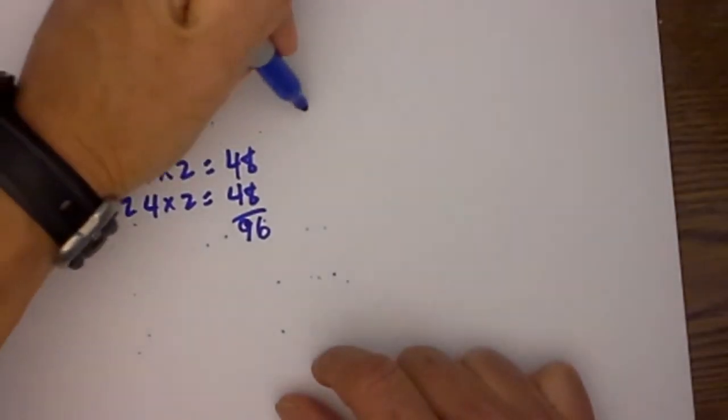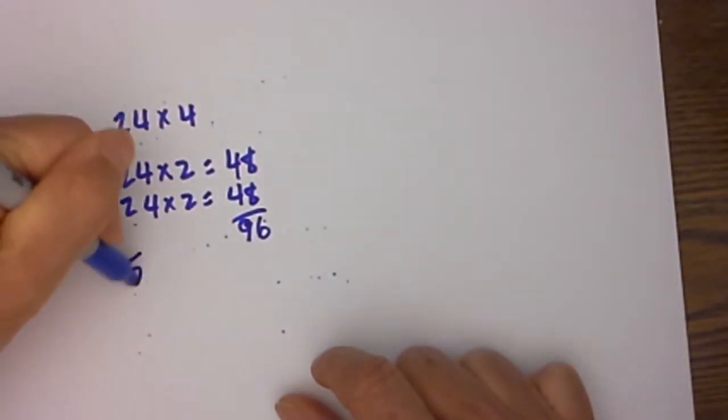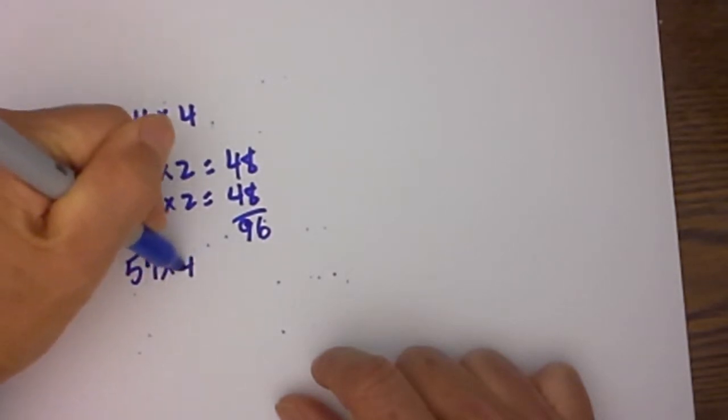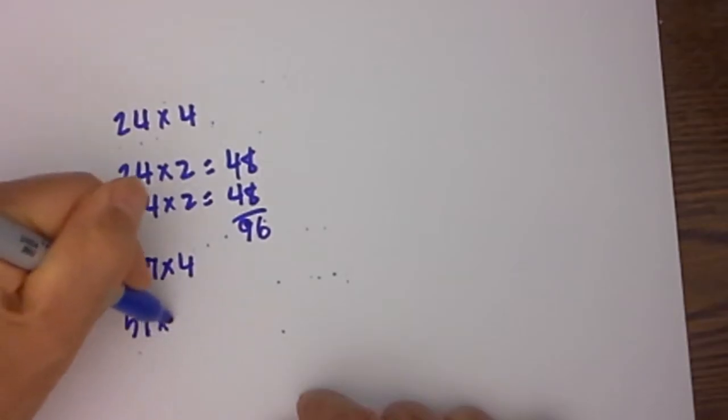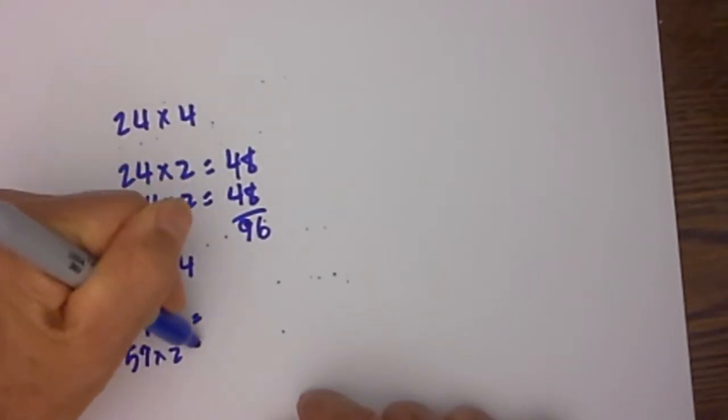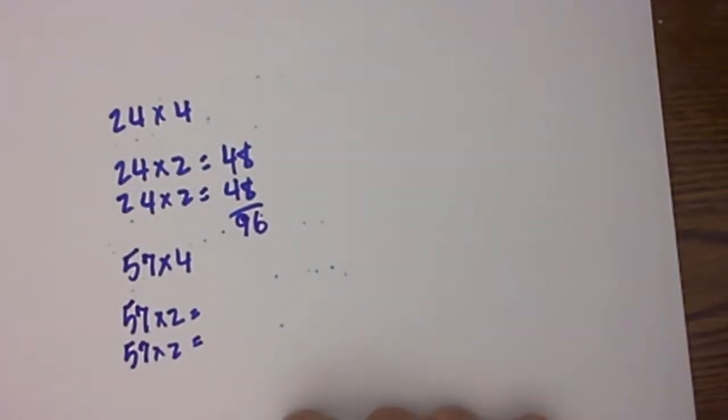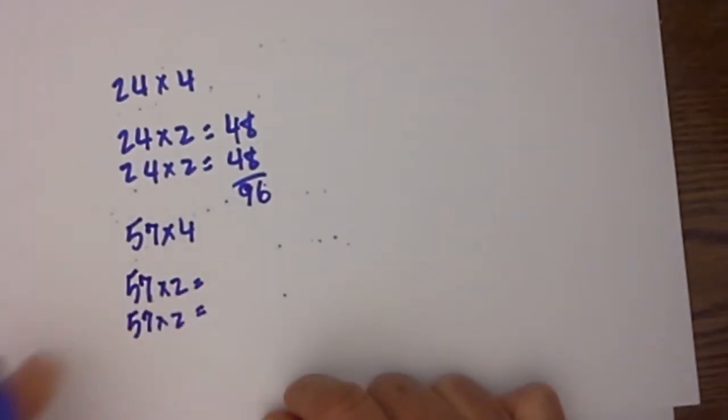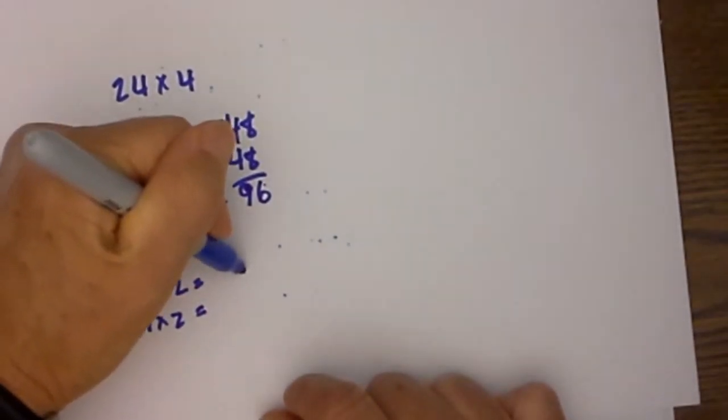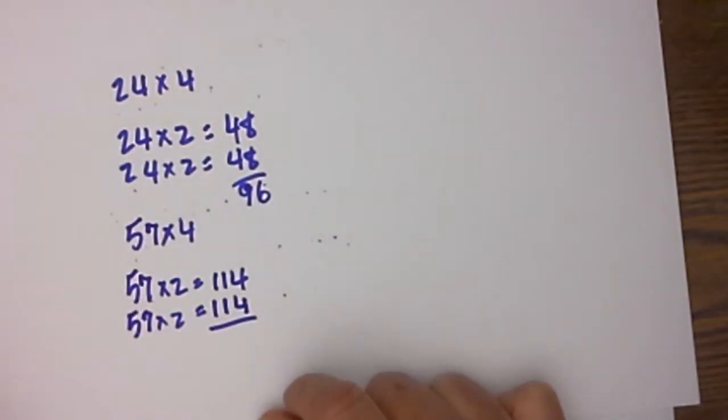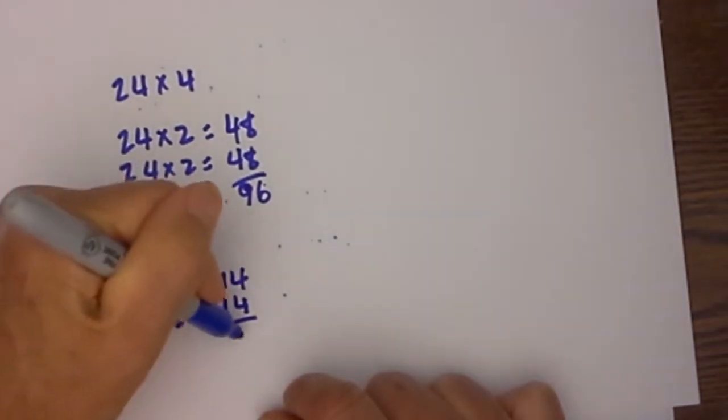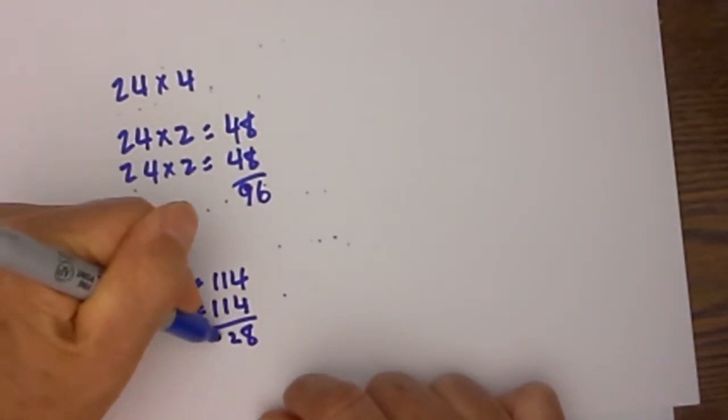Let's try this next one. Let's say we have 57 times 4. I simply take 57 times 2 and 57 times 2. Let's say we have 14 and 10, carry the 1, 14, and add these two together. That becomes 228.